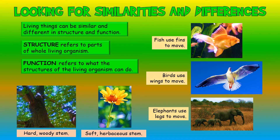We can look at another example in plants. Most plants have stems that support the leaves, but different plants have different kinds of stems. Some stems are hard and woody, whilst other stems are soft and herbaceous.